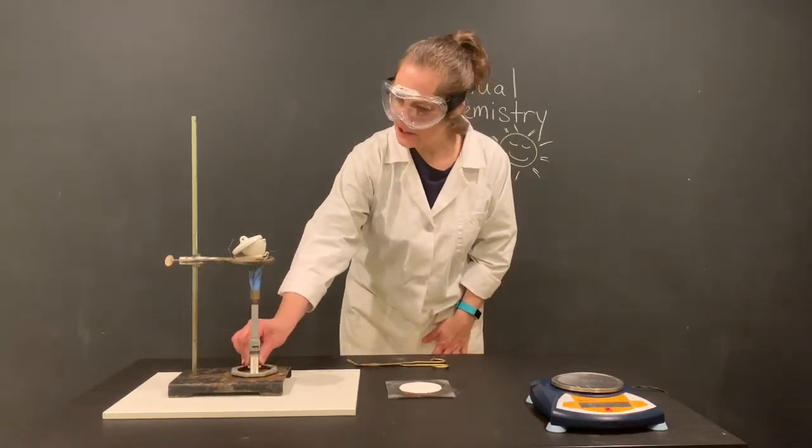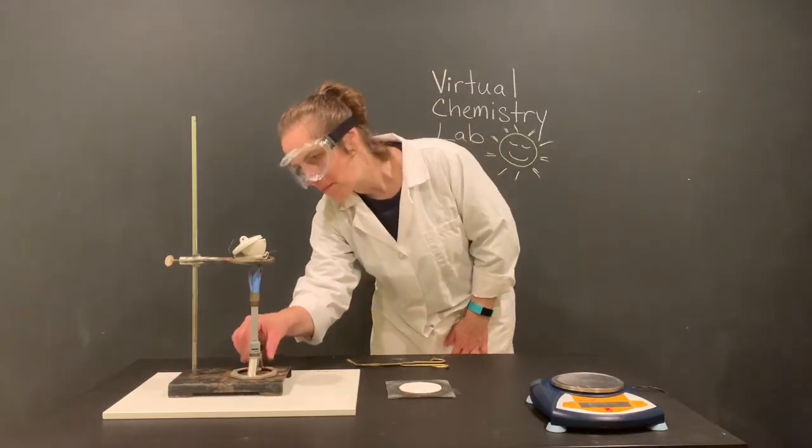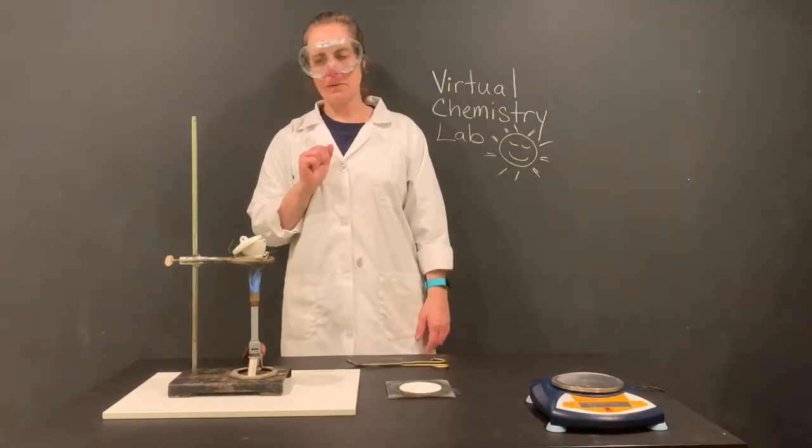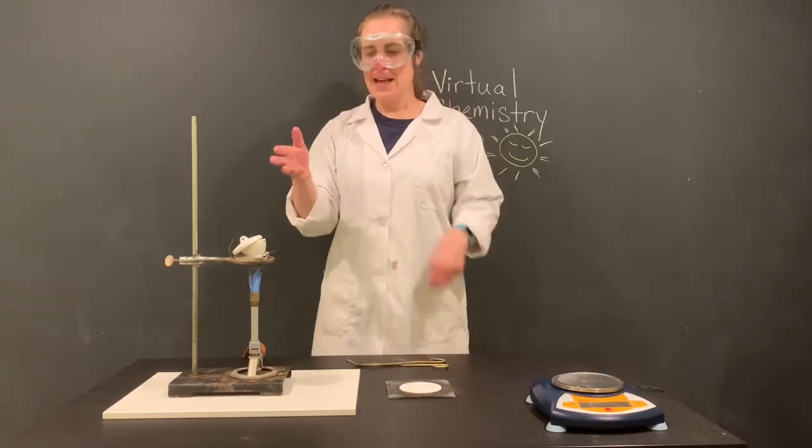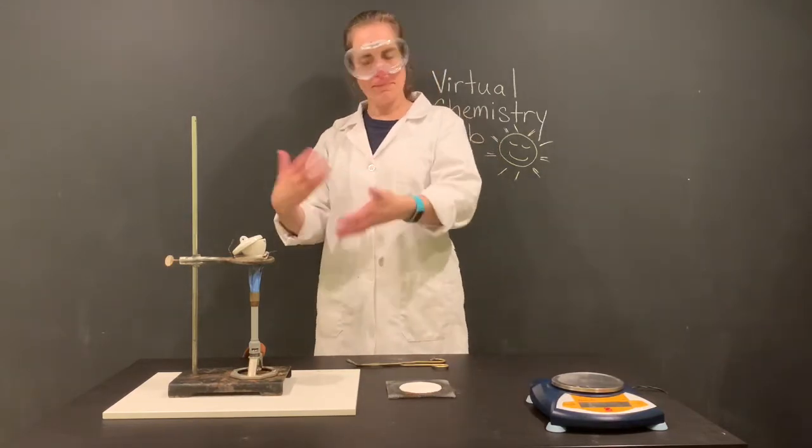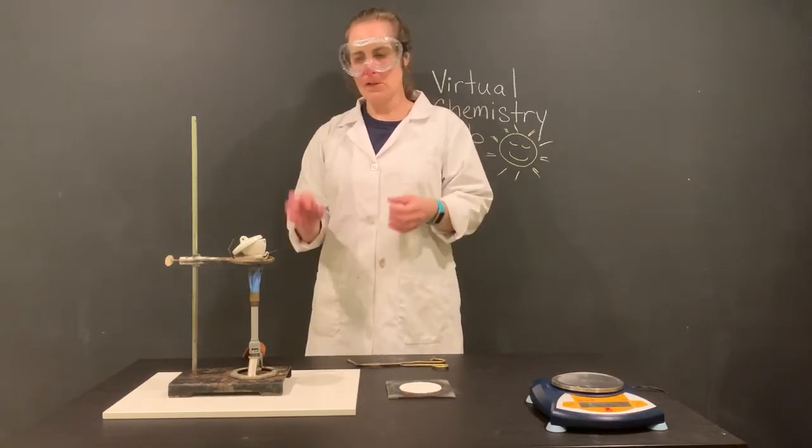So I'm going to carefully slide it under here, and it should be just kissing the bottom of my crucible there. Now you know crucibles, they get hot. They get hot fast, so even though this has been over the flame only for a very short time, it's already getting quite warm.